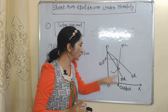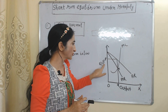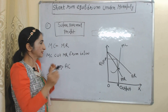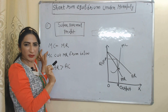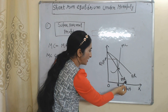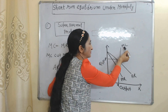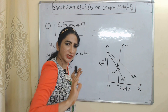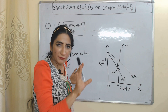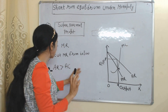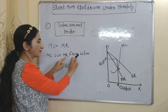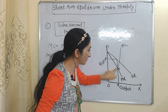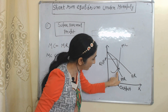In this diagram, on the X-axis we have output and on the Y-axis we have revenue, cost, and price. The first condition of super normal profit is marginal cost equal to marginal revenue. This MR is the marginal revenue curve and MC is the marginal cost curve. At point E, marginal cost is equal to marginal revenue, so our first condition is satisfied. The second condition is MC cuts MR from below — at point E, you can see MC becomes equal to MR by cutting from below.